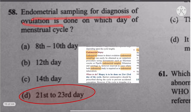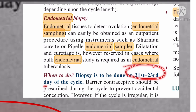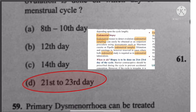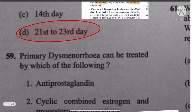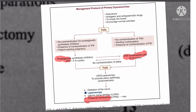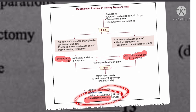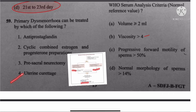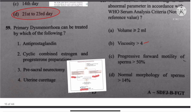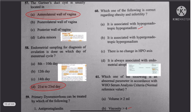Question 58: Endometrial sampling for diagnosis of ovulation should be done on the 21st to 23rd day of the menstrual cycle. Question 59: Primary dysmenorrhea can be treated with prostaglandin inhibitors, OCPs, and pre-sacral neurectomy. Uterine curettage is not mentioned in Datta. Statements 1, 2, and 3 are true.